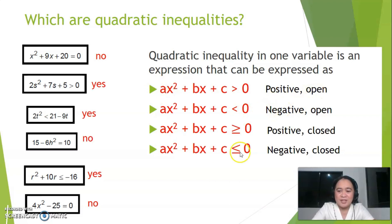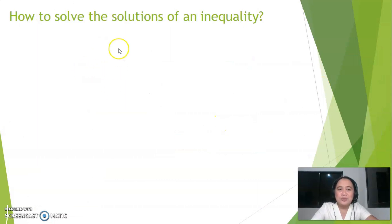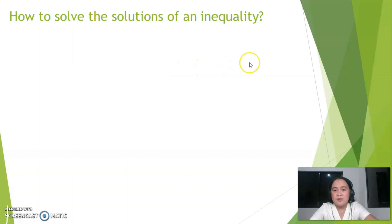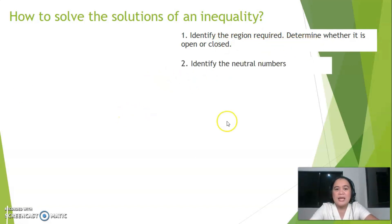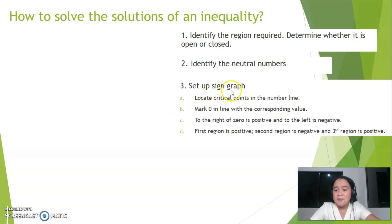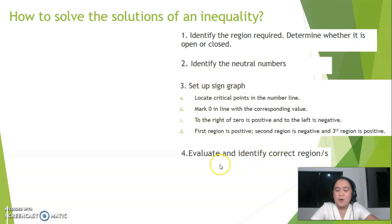Now, how do you solve the solutions of an inequality? There are steps to follow. Step one: identify the region required — whether it is open or closed. Step two: identify the neutral numbers. Step three: set up the sign graph following four sub-steps. Step four: evaluate and identify the correct region or regions.